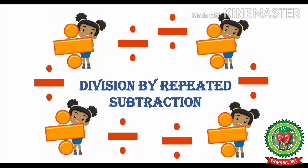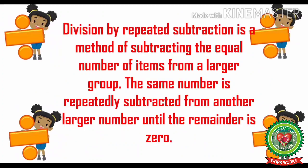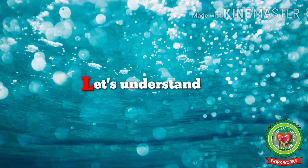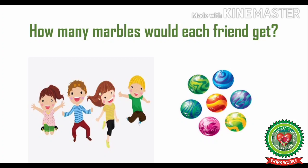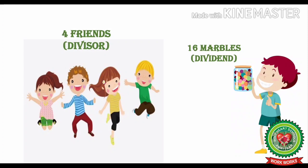Now let us start with division by repeated subtraction. What is division by repeated subtraction? It is a method of subtracting the equal number of items from a larger group. The same number is repeatedly subtracted. There are 16 marbles. Rohan wants to divide these marbles among his 4 friends. How many marbles would each friend get? Here, 16 marbles is the dividend and 4 friends is the divisor. So we have to start subtracting 4 from 16 until we get 0.